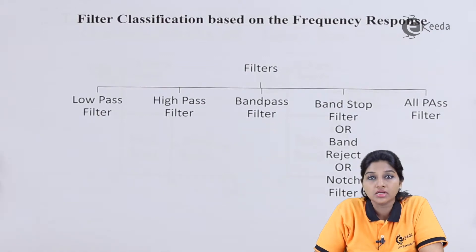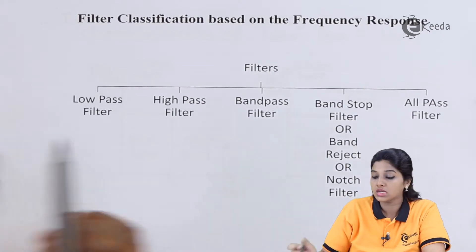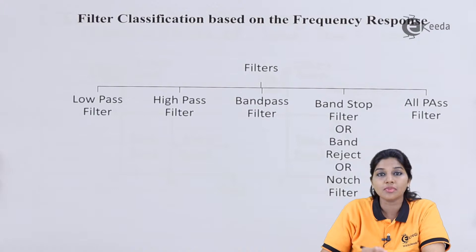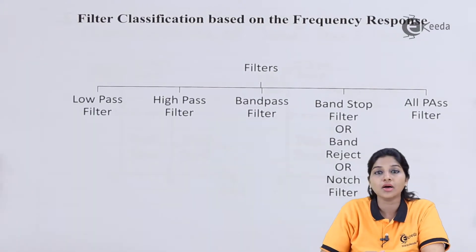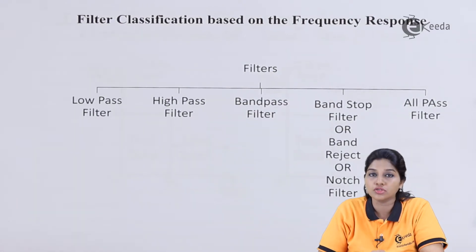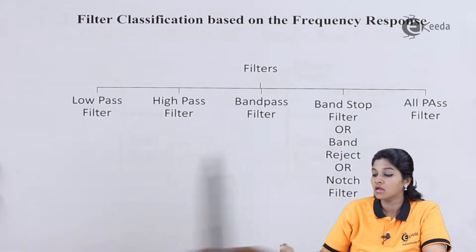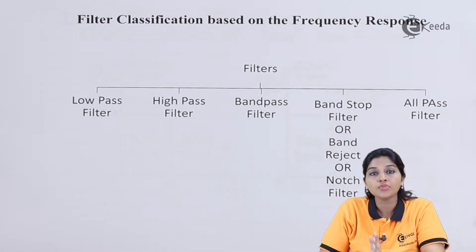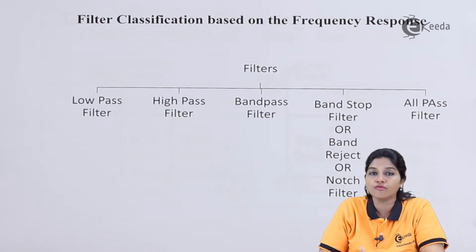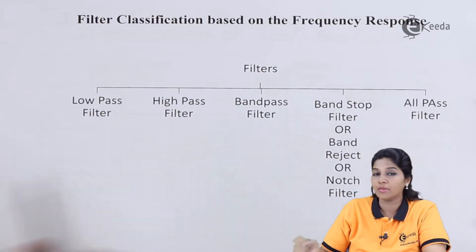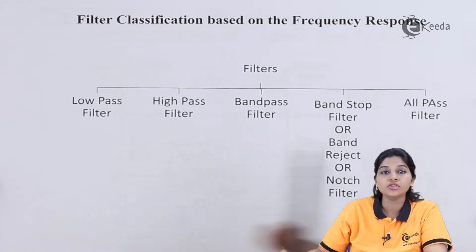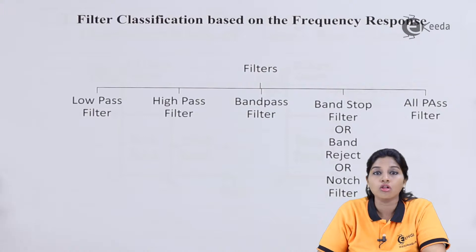As their names indicate, low pass filter passes low band of frequency, high pass filter passes high band of frequency, band pass filter passes a particular range or band of frequency, band stop filter stops the band of frequency and is considered as complementary filter of band pass filter, whereas all pass filter passes all the frequencies.